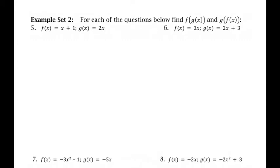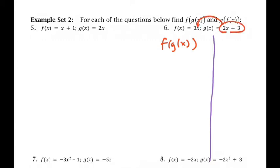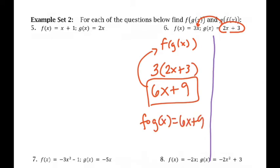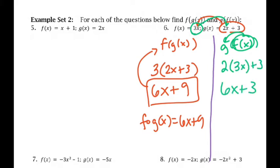Number six: if f of x equals 3x and g of x equals 2x plus 3, find f of g of x. I'm going to take g of x and put it into f for x — so 3 times g of x, which gives 6x plus 9. That's what f of g of x is. And for g of f of x, I'm going to take f of x and put it into g — so 2 times whatever x is plus 3, giving 6x plus 3. Notice your 2 does not get distributed because there are no parentheses. Again, they're not the same thing.